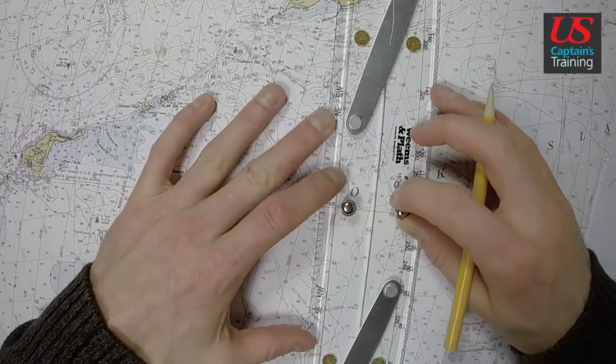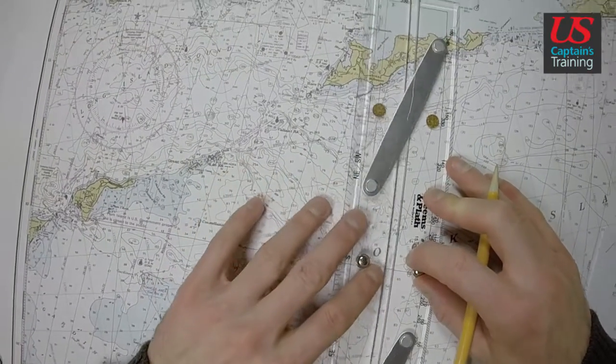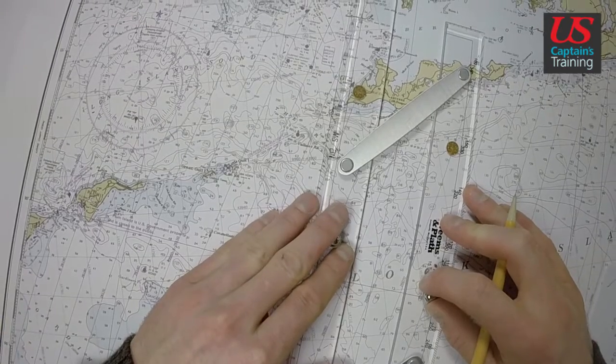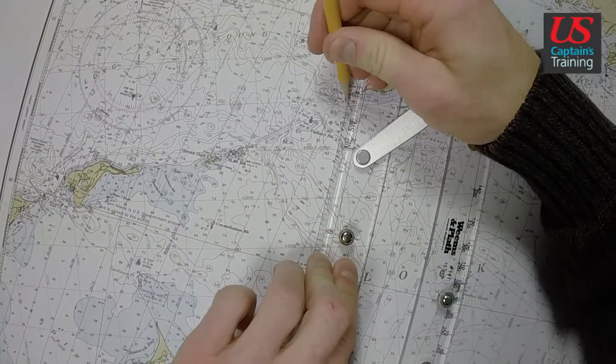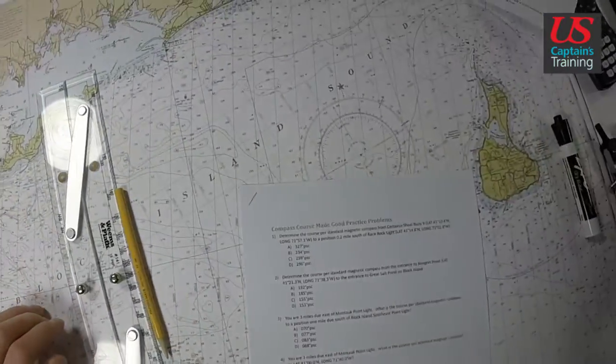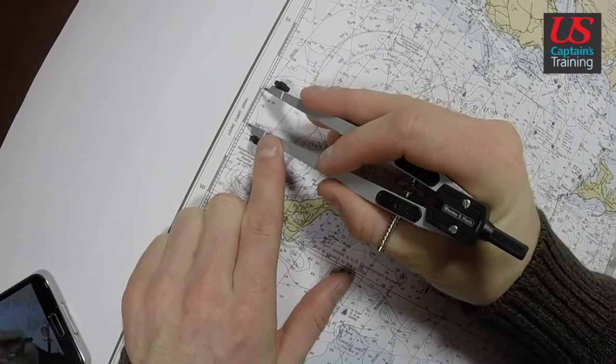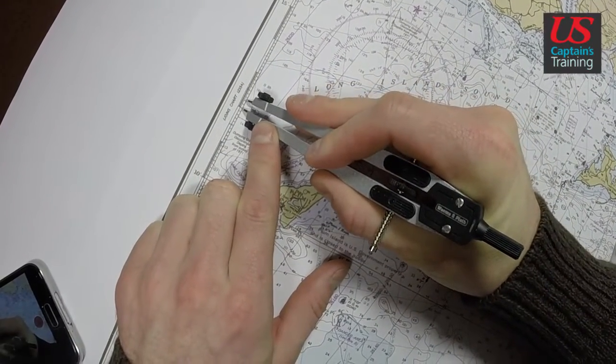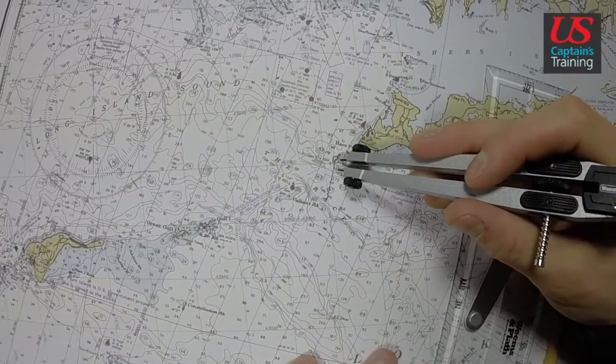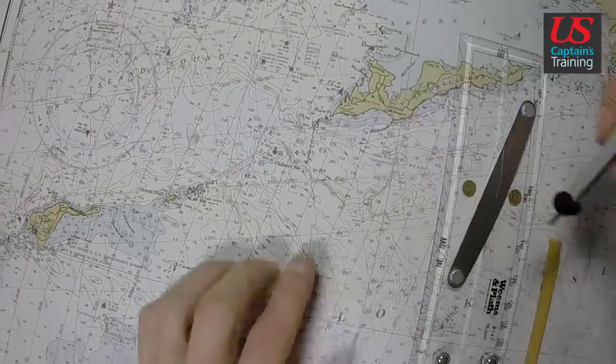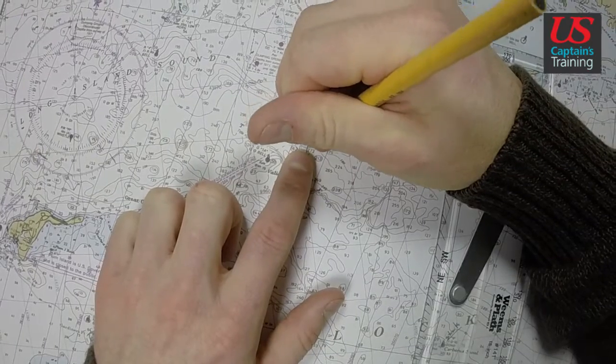I need to go 0.2 miles south, so I'll line up on a meridian, perfectly north and south. Walk over to Race Rock Light, which is in the light list if you can't find it. Strike a line. Take my dividers, and we'll look at 0.2 miles. Good. And from Race Rock Light, I'll make a mark. Now this is 0.2 miles south of Race Rock Light.